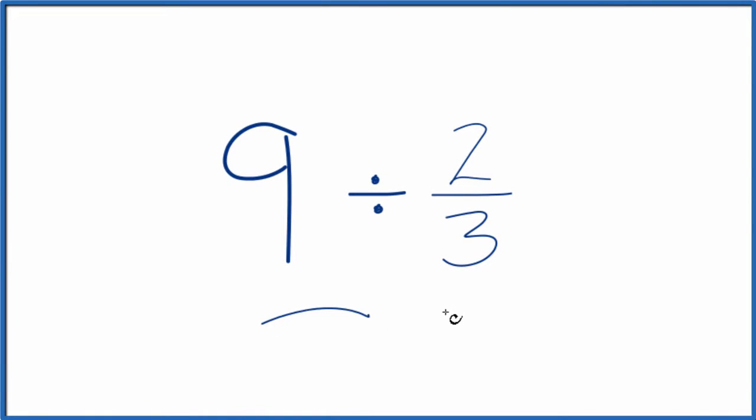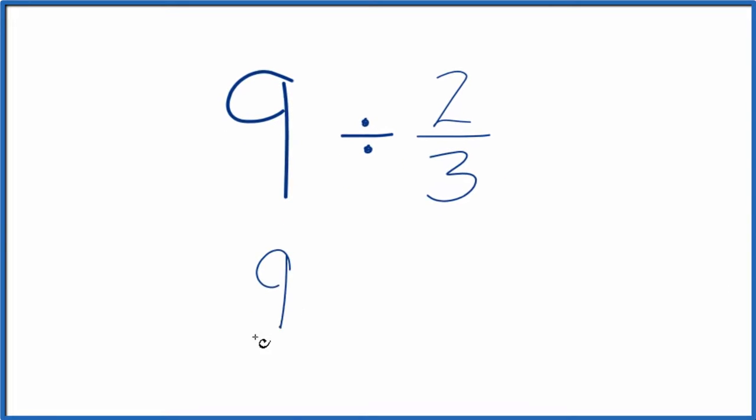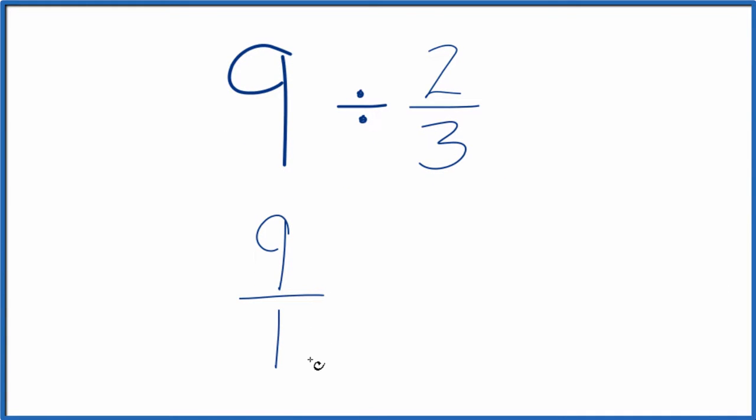Here's how you can divide 9 by 2 thirds. So right off, what we're going to do is we're going to call this 9 over 1. 9 divided by 1 is still 9, but now we have a fraction, and that's very helpful.